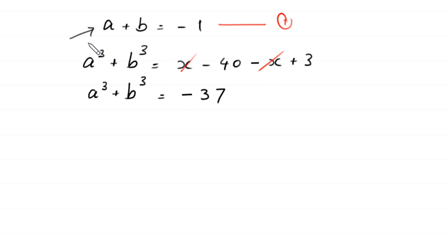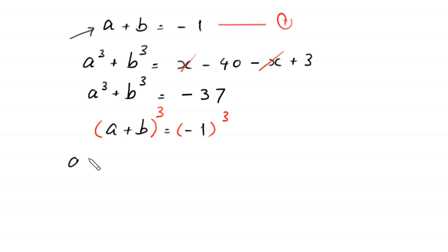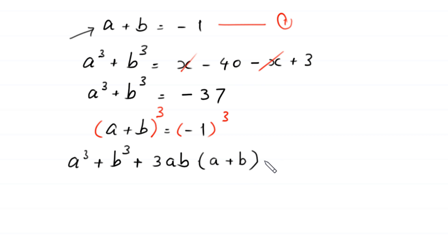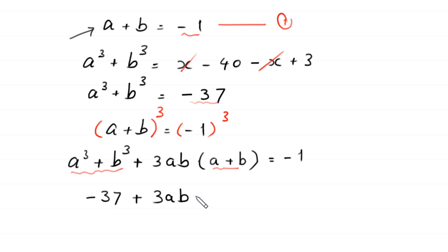We take the cube of both sides of equation 1: a plus b is equal to negative 1. Expanding, a plus b whole cubed equals a cubed plus b cubed plus 3ab times a plus b, which equals negative 1 cubed, which is negative 1. We replace a cubed plus b cubed with negative 37 and a plus b with negative 1, giving us negative 37 plus 3ab times negative 1 is equal to negative 1.